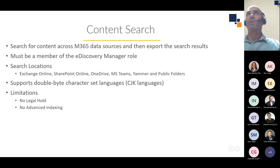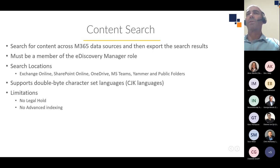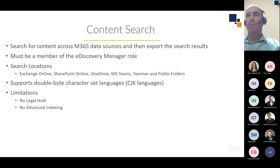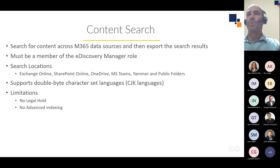Content Search is the more simplistic e-discovery tool within Purview. It gives you the ability to search and export content in Microsoft 365, and you must be a member of the E-Discovery Manager role group. It allows you to search various locations such as Exchange Online, SharePoint Online, OneDrive, Microsoft Teams, Microsoft 365 Groups, Yammer Groups, and public folders. It also supports double-byte character set languages — Chinese, Japanese, and Korean — so you can set the language type when doing keyword searches. Limitations include no legal hold and no advanced indexing.